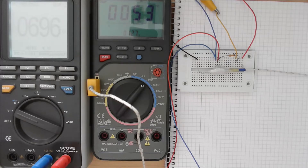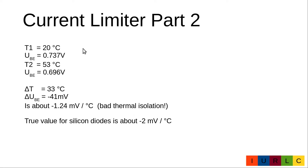The warm-up process stabilizes at 53°C, and the base-emitter voltage is 696 mV. Summarizing: at 20°C the base-emitter voltage was 0.737 V, and at 53°C it was 0.696 V. This gives a delta temperature of 33°C and a delta base-emitter voltage of −41 mV. However, this is not the correct value — due to the simple setup, poor thermal isolation causes heat to escape through the leads to the breadboard. The true value for silicon is about −2 mV per °C.